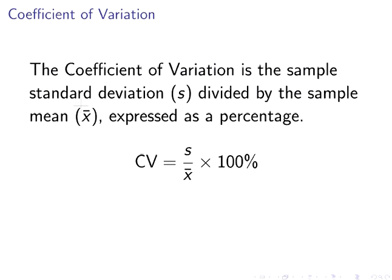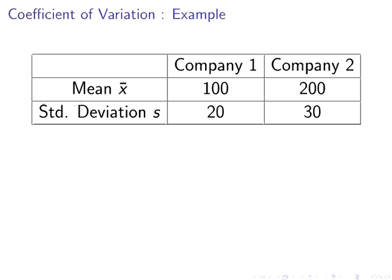Let's look at an example here. We have two companies, Company 1 and Company 2, and these are the statistics from the samples from both companies. Company 1 has a sample mean of 100 and a sample standard deviation of 20. Company 2 has a sample mean of 200 and a sample standard deviation of 30.